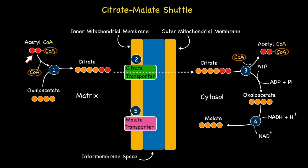During step five, the four carbons now within malate are transported back into the matrix through the malate transporter.